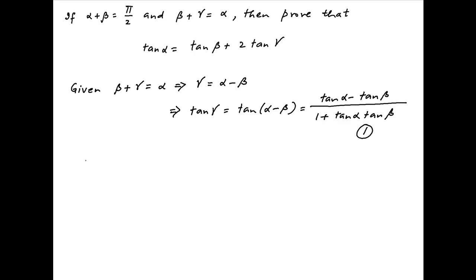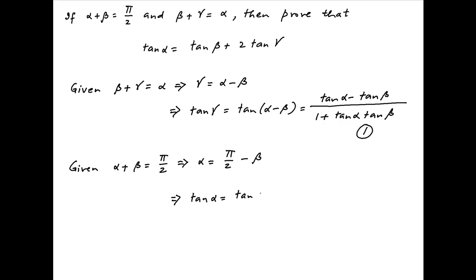We are also given that α + β = π/2, therefore α = π/2 - β. Taking the tangent of both sides, we get tan α = tan(π/2 - β), which equals cot β. Let's call this Result 2.